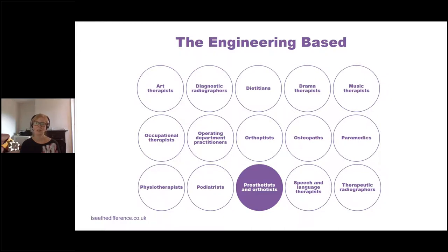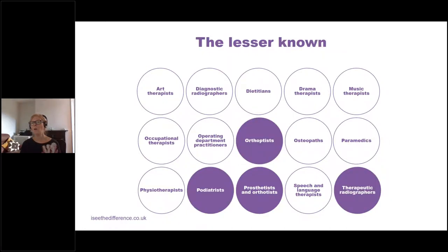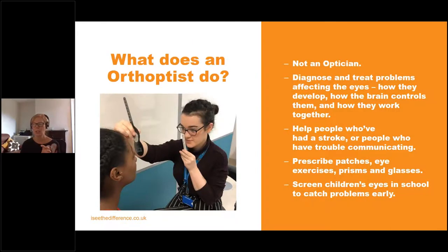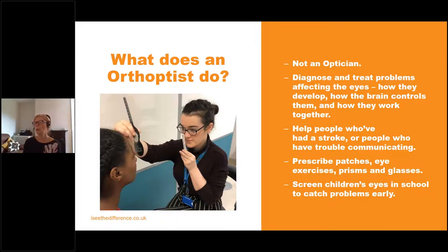Engineering-based: particularly prosthetics and orthotics, because they are making high-tech technology to replace a missing limb. The four on the screen here are the ones that, when I'm chatting to young people or careers advisors or teachers, they don't really know much about what we do. An orthoptist might be a word you haven't heard of — I hadn't heard of them before I started this job, even though I work in healthcare. They're not an optician, but they do diagnose and treat different conditions of the eye, really looking at how the brain works — the neuroscience of the brain — and how that interacts with the eye. They're experts in how the eyes move and work together, specialising in visual function particularly in children and those with communication difficulties.